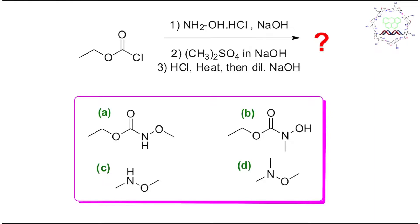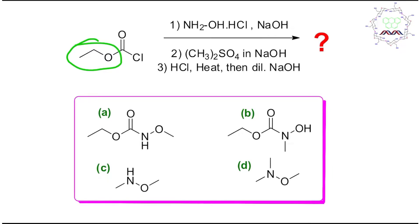As usual, I suggest you first look at the reactant. Here the reactant molecule is pretty simple. It's a kind of acid chloride — or more specifically, a carbonic acid chloride. One side is an ethyl ester and the other side is an acid chloride. It is true that it is not as reactive as acetyl chloride, but still it's pretty reactive.